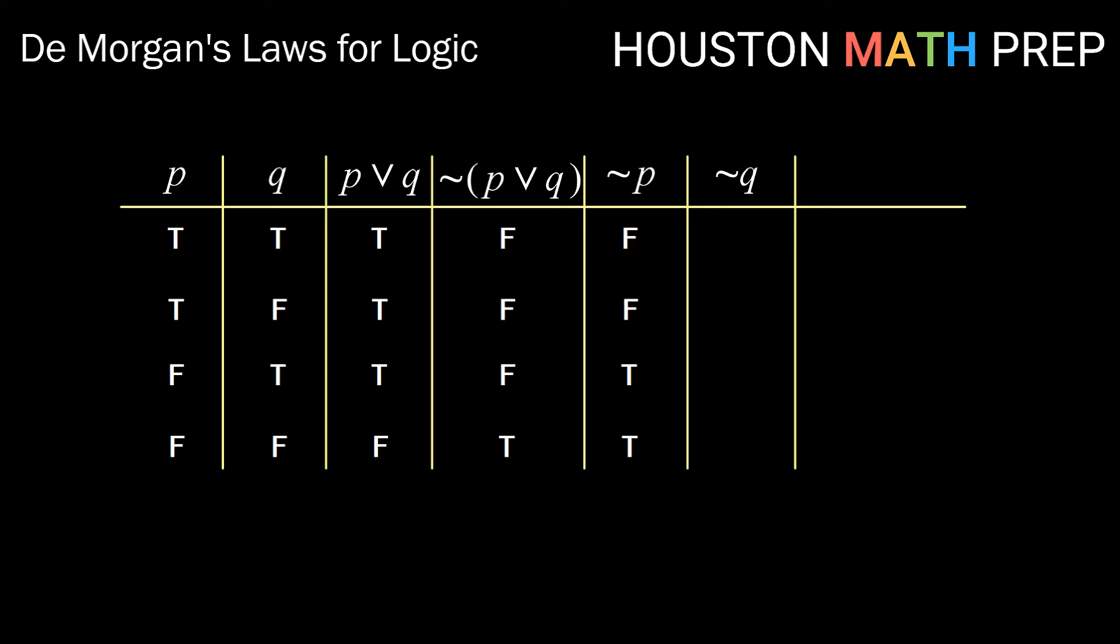Creating not P and not Q by taking opposite truth values of P and Q, we can finally look at the conjunction of not P and not Q. This will only show true when both not P and not Q are true. So we have false, false, false, true.